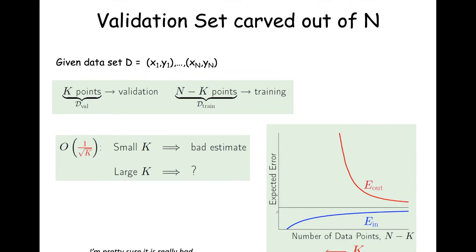The validation set D eval of size K is carved out of the training set, leaving N minus K for training D train. If you have a small validation set, E val is a bad estimate for E out. If K is large, E val is a good estimate, but you're robbing the training set of instances. With fewer instances in the training set, performance will be poor. There's a natural tension between the size of the training set and the size of the validation set.